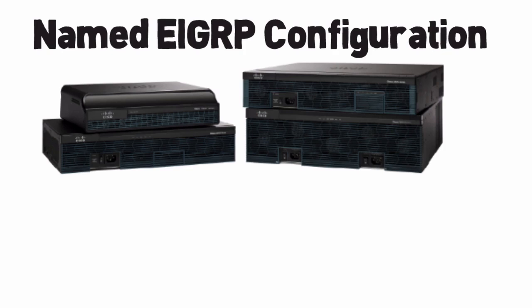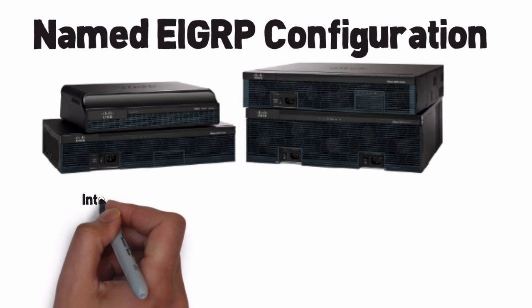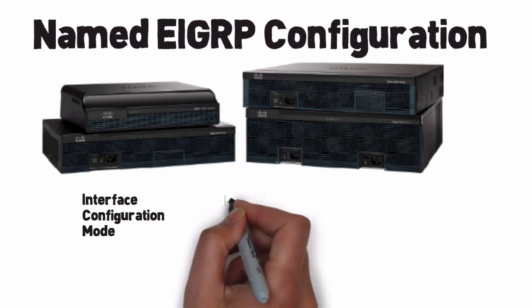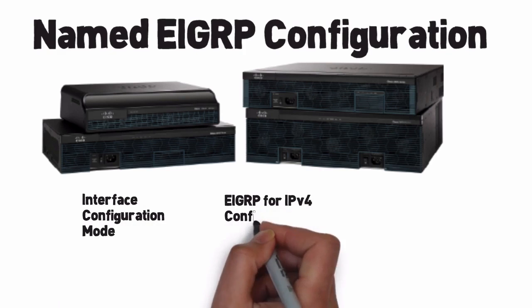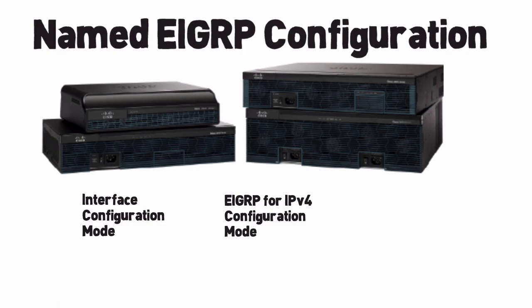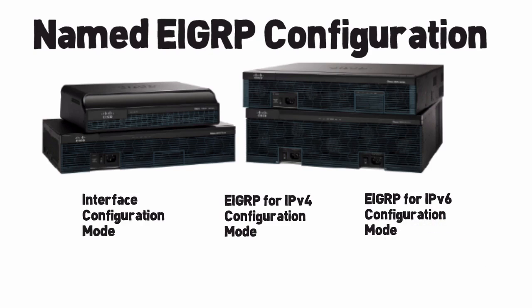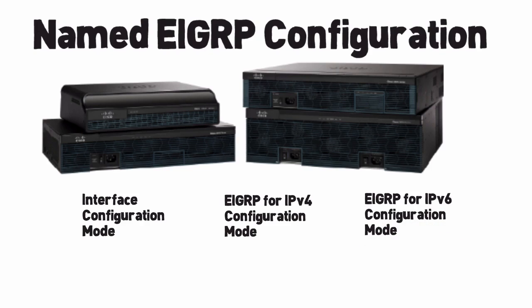We might need to do some things in interface configuration mode. And if we have EIGRP supporting both IPv4 and IPv6, we're going to need to go into EIGRP router configuration mode for IPv4, and we'll need to go into another EIGRP router configuration mode for IPv6. Going back and forth between all these different configuration modes not only makes it more complex for us to configure, it can be more difficult to troubleshoot and more difficult to visualize what's really happening.